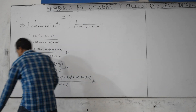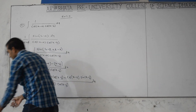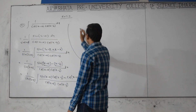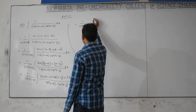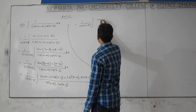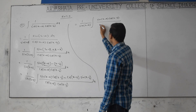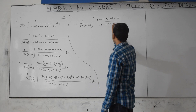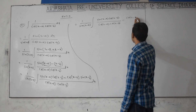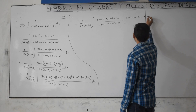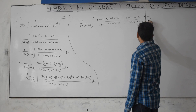Which is equal to 1 by sin(b minus a), integration of sin(x minus a) into cos(x minus b) divided by cos(x minus a) into cos(x minus b), minus cos(x minus a) into cos(x minus b) dx.